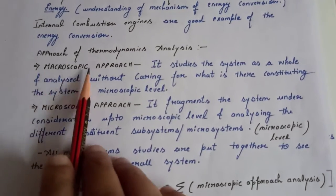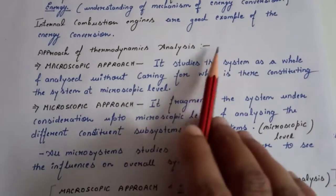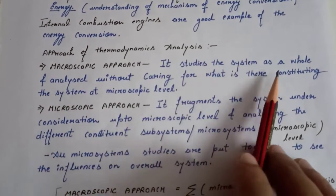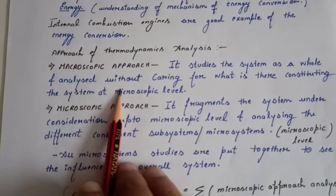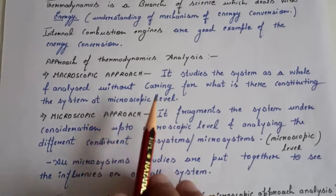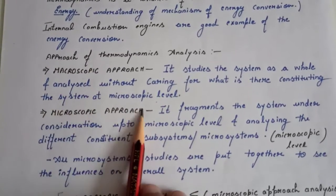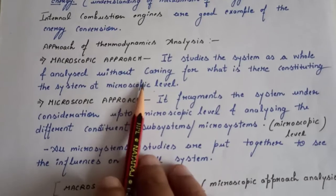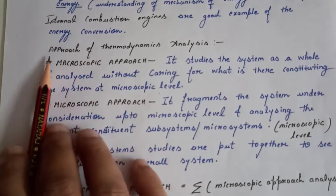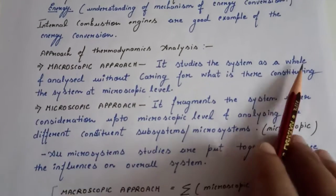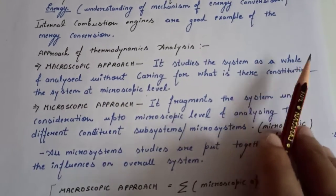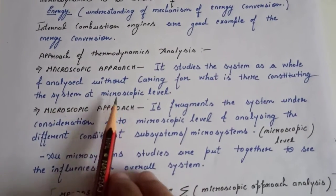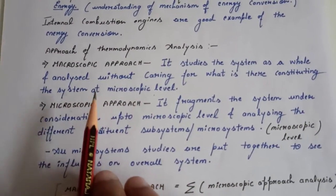In macroscopic approach we study the system as a whole and analyze without caring for what is there constituting the system at the microscopic level. That means in this approach we do not go into the microscopic level, we just analyze the system as a whole without going into the details of what the process is.